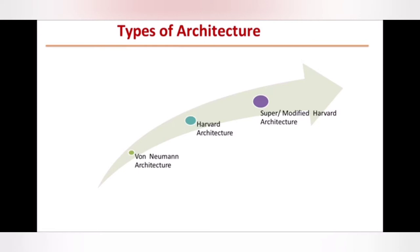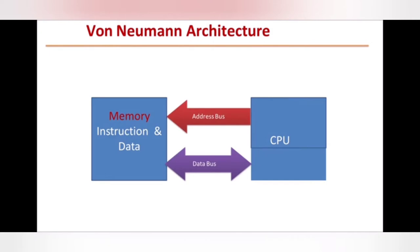There are three architectures: one is Von Neumann architecture, Harvard architecture, and Super or Modified Harvard architecture. In the next parts I will explain the advantage of Harvard architecture and the Super Modified Harvard architecture over Von Neumann. Let's start with the Von Neumann architecture.